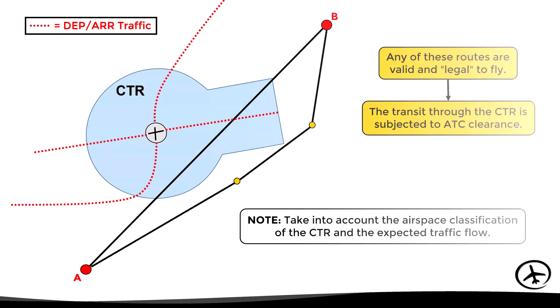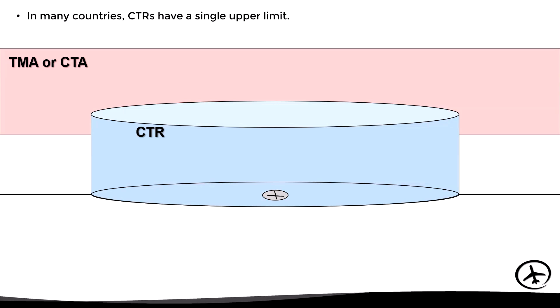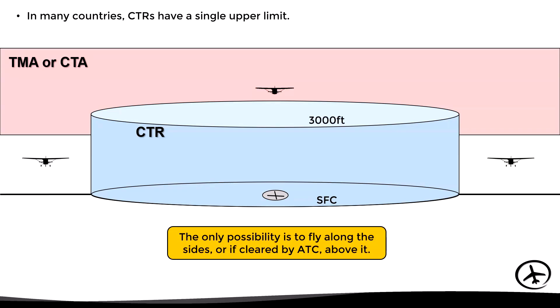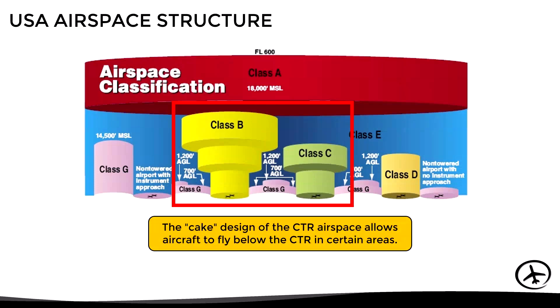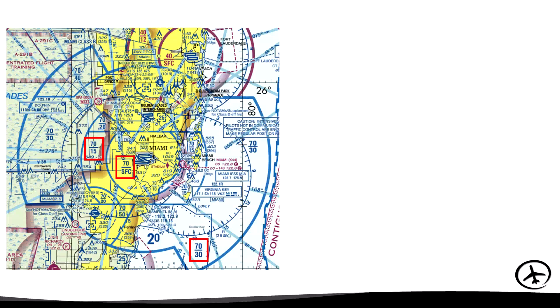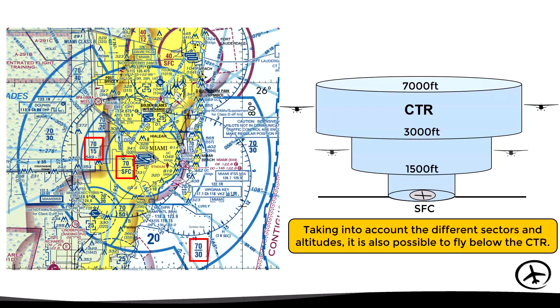Sometimes there is another option. In many countries, CTRs have a single upper limit, so the only option is to fly along the sides, or if cleared by ATC, fly above it. However, in some countries like the USA, many CTRs have the shape of a cake, which allows aircraft to fly below the CTR in certain areas. For example, in Miami, depending on the area, aircraft could fly below the CTR within a certain range of altitudes. Another important aspect is to check the classification of the airspace where we are planning to fly, since for example in Class Alpha airspace, VFR flights are not allowed.